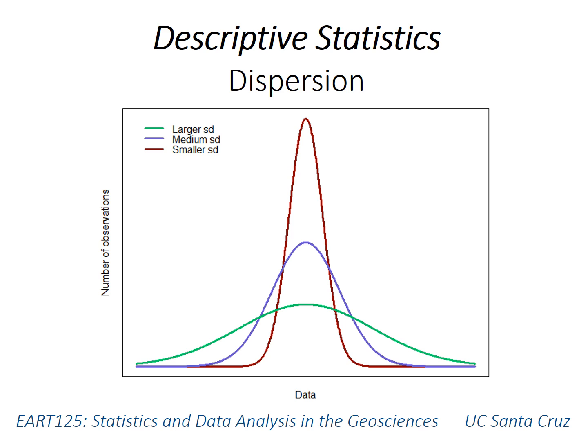This video continues the discussion of descriptive measurements that can summarize numeric data. We previously talked about central tendency, and now we're going to talk about measures that can describe the dispersion, or the variability, of measurements within a sample.